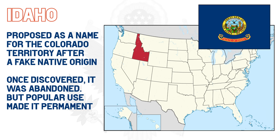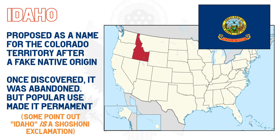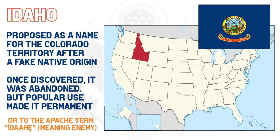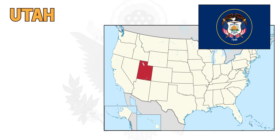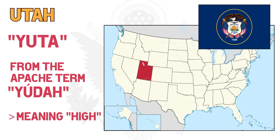To the east is Idaho. The name was initially proposed for the colonial territory of Colorado after a supposed native term, but when people realized the native term didn't exist, they abandoned the idea — however it was too late, as it had fallen into common usage and ended up being proposed for the territory. An alternative etymology attributes the name to the Apache word Idaje, meaning 'enemy.' An Apache term was also used by the Spanish to name Utah: Yuda, meaning 'high,' was the Spanish designation for the local people, and after becoming part of the US, it was adapted into English as Utah.